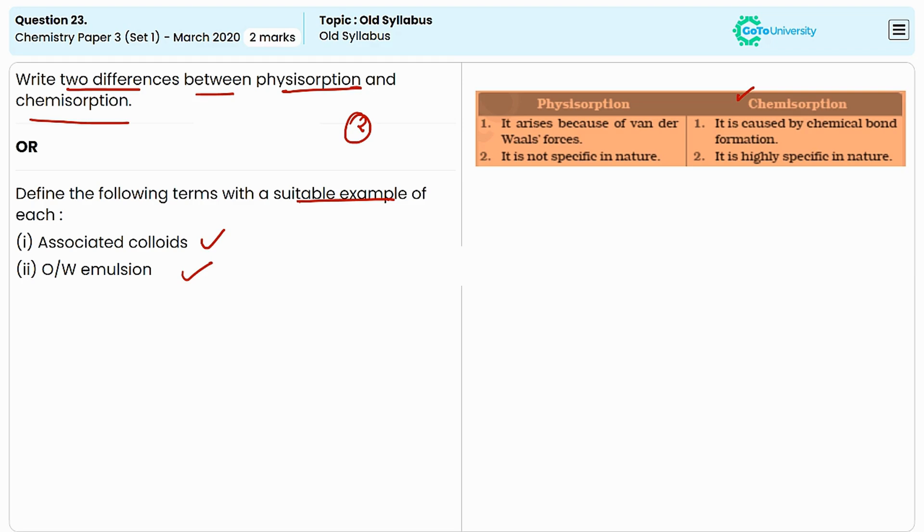For the definition of associated colloids you will get one mark, and for defining oil in water emulsion you will get another mark, for a total of two marks.